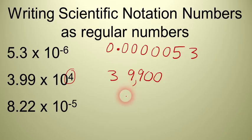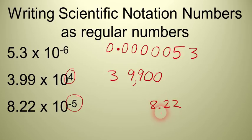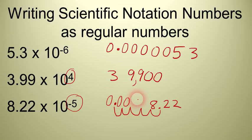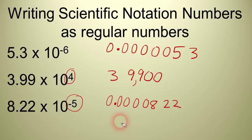One more example: 8.22 times 10 to the negative 5th. We have a negative exponent, so this is a small number. We move the decimal point to the left 5 places: 1, 2, 3, 4, 5. We need a decimal point there with placeholder zeros. The answer is 0.0000822. Hopefully at this point you have a pretty good feel for how to deal with scientific notation. In our next lesson, we're going to learn how to input scientific notation numbers into your calculator, which is a very important skill in science.